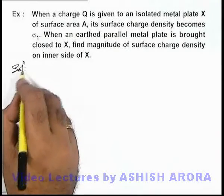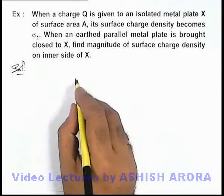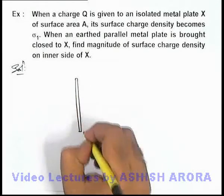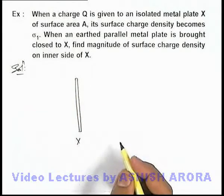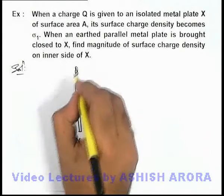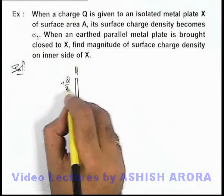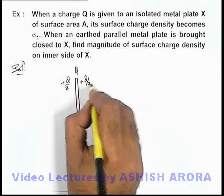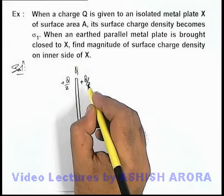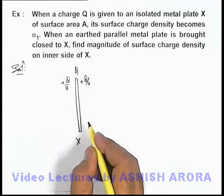In this situation, let us first draw the setup. We are given a metal plate X which is isolated, and when a charge Q is given to it, we know that on an isolated plate, +Q/2 and +Q/2 uniform distribution of charge will take place on the two surfaces.